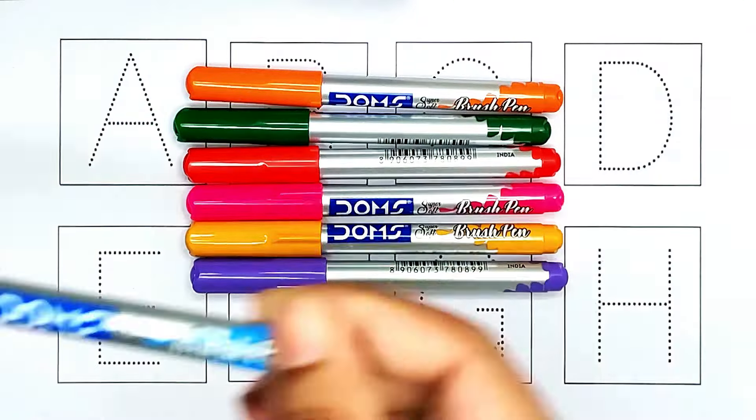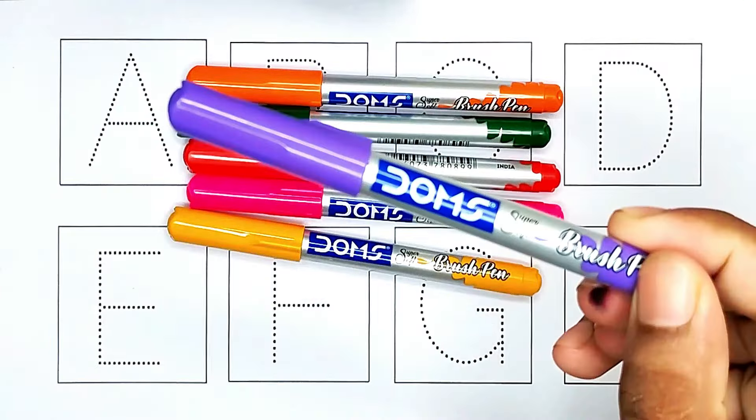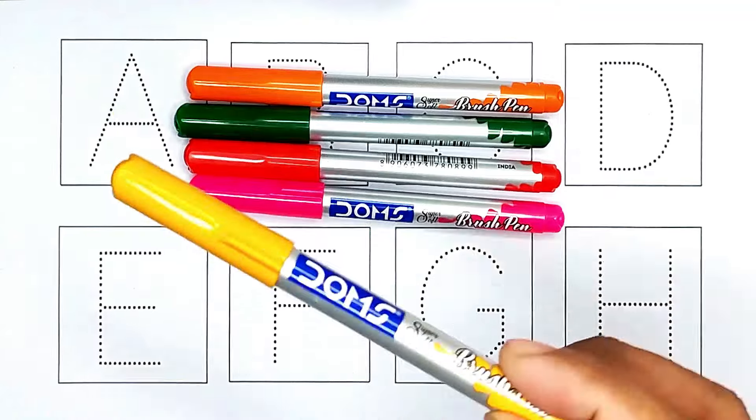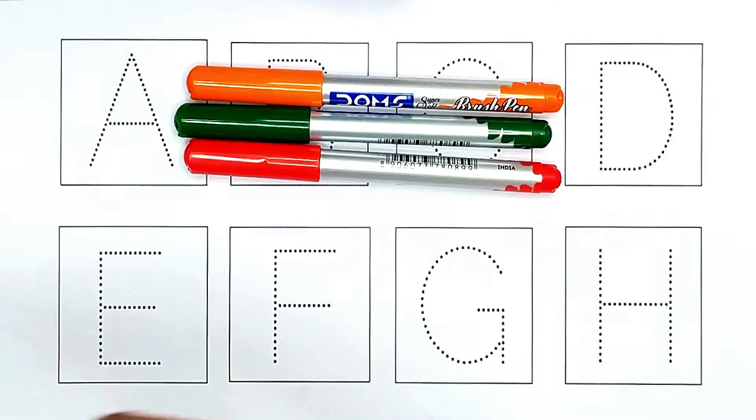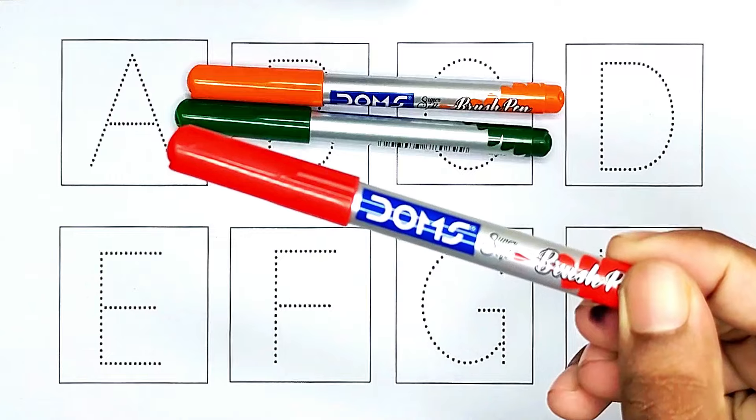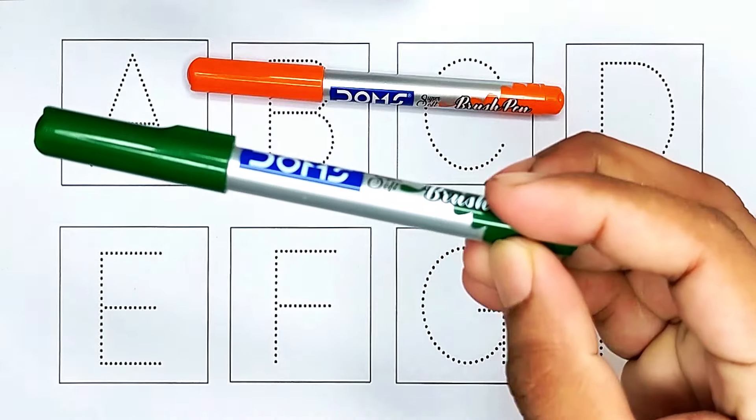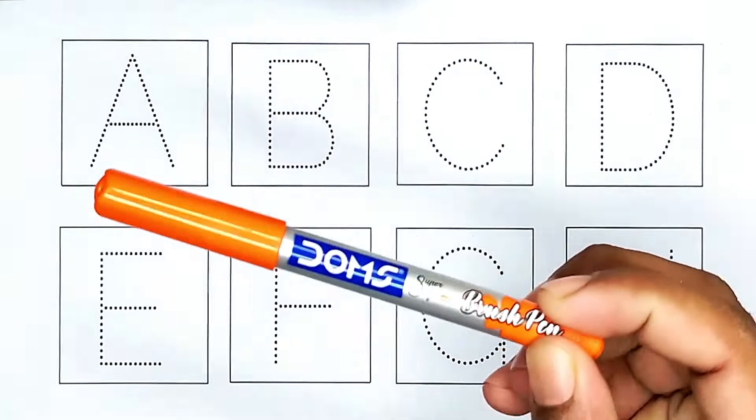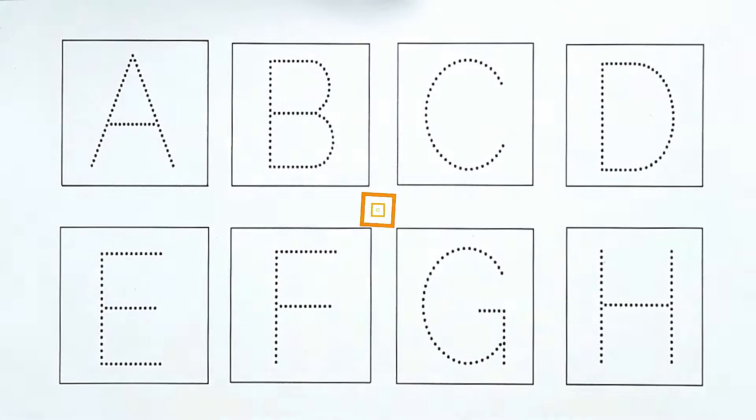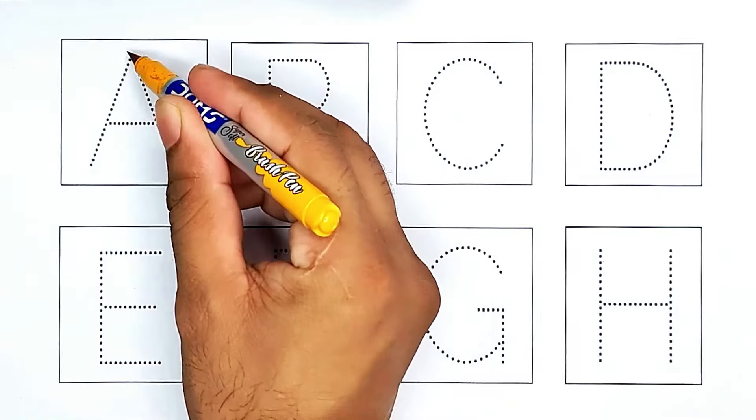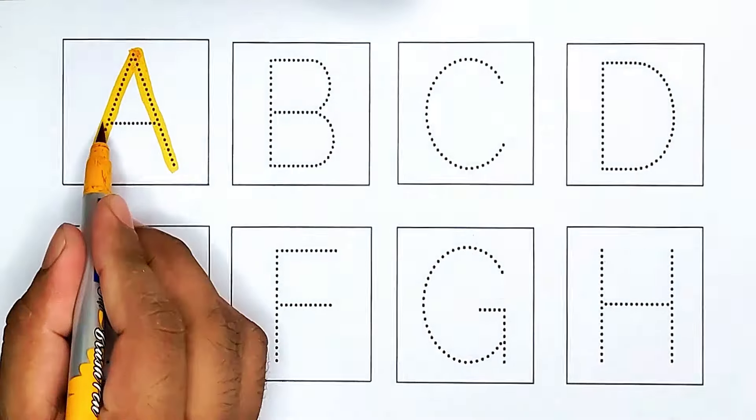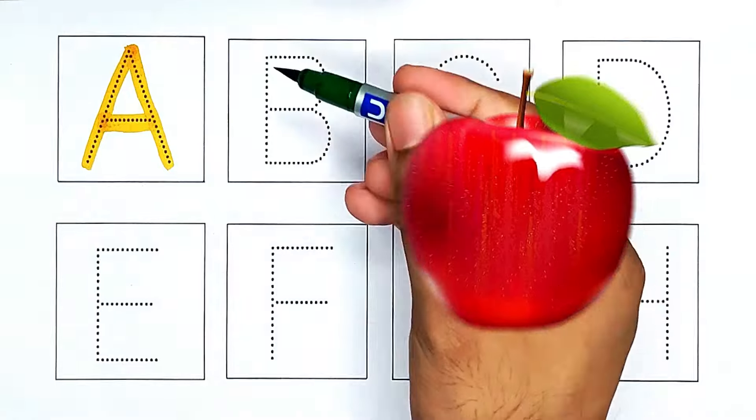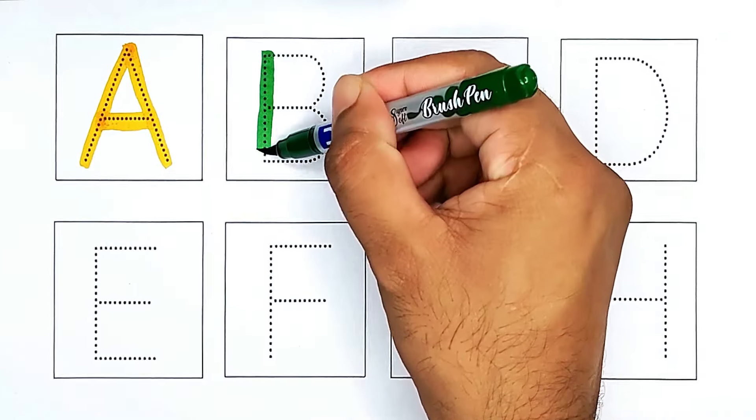Sky blue color, purple color, yellow color, pink color, red color, green color, orange color. A, A for apple. B, B for banana.